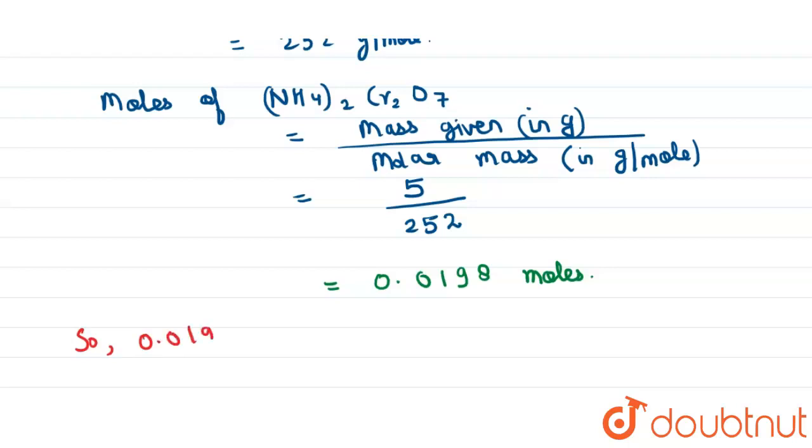This mole of ammonium dichromate will produce 0.0198 mole of nitrogen gas.